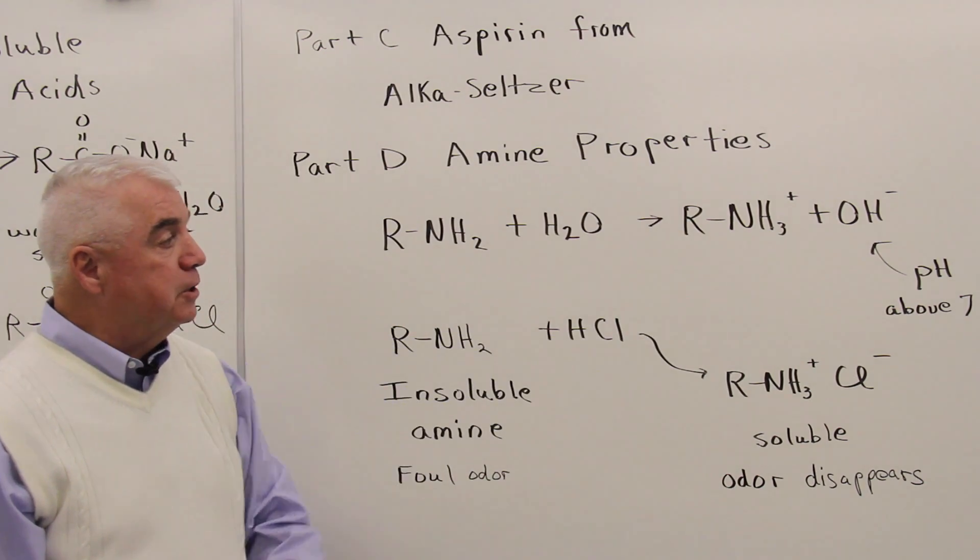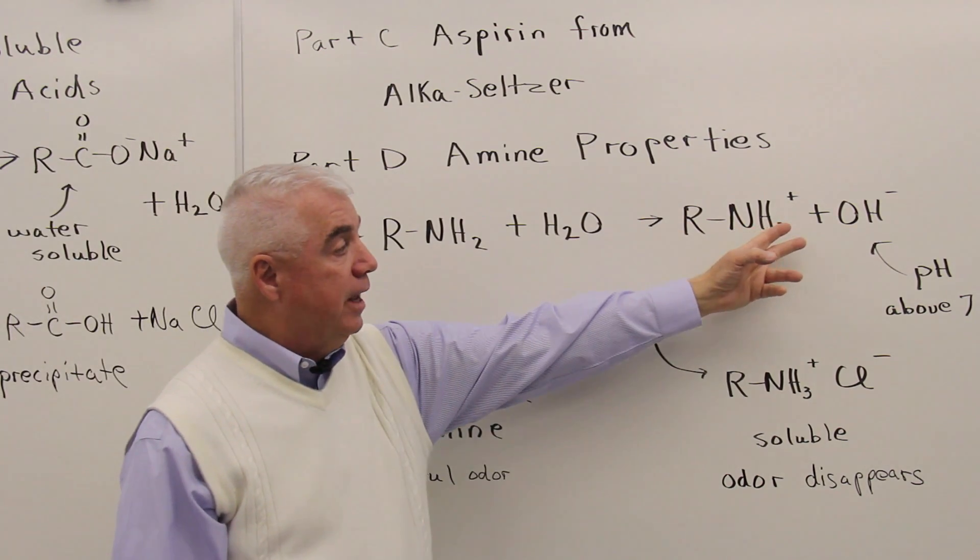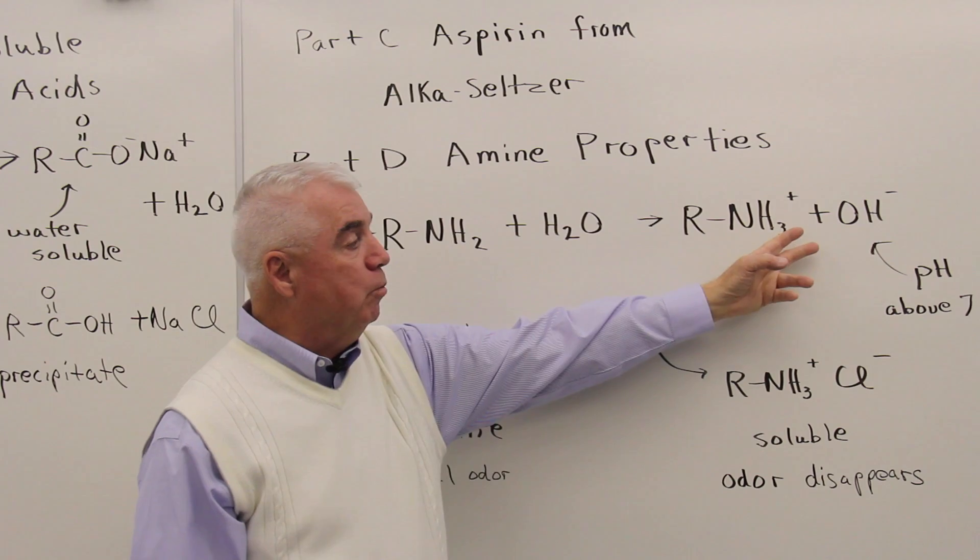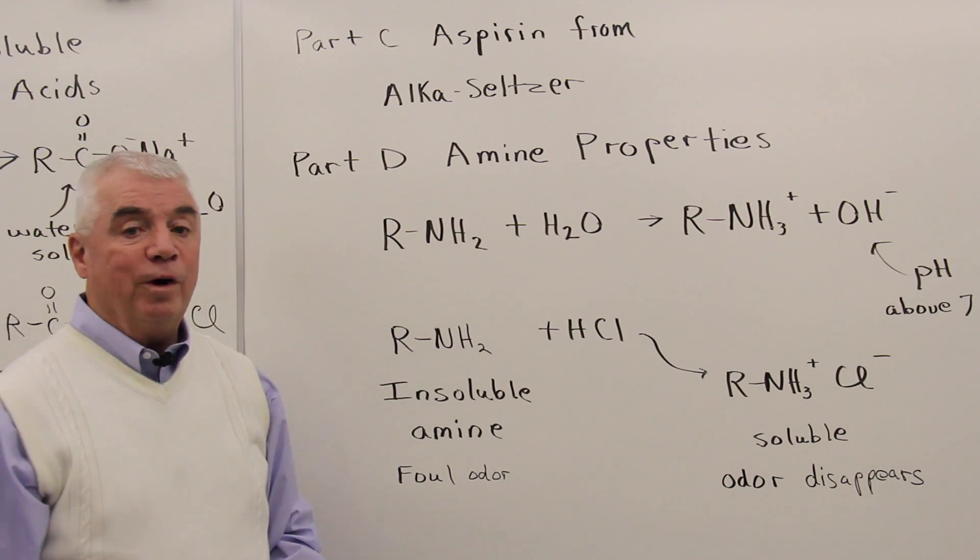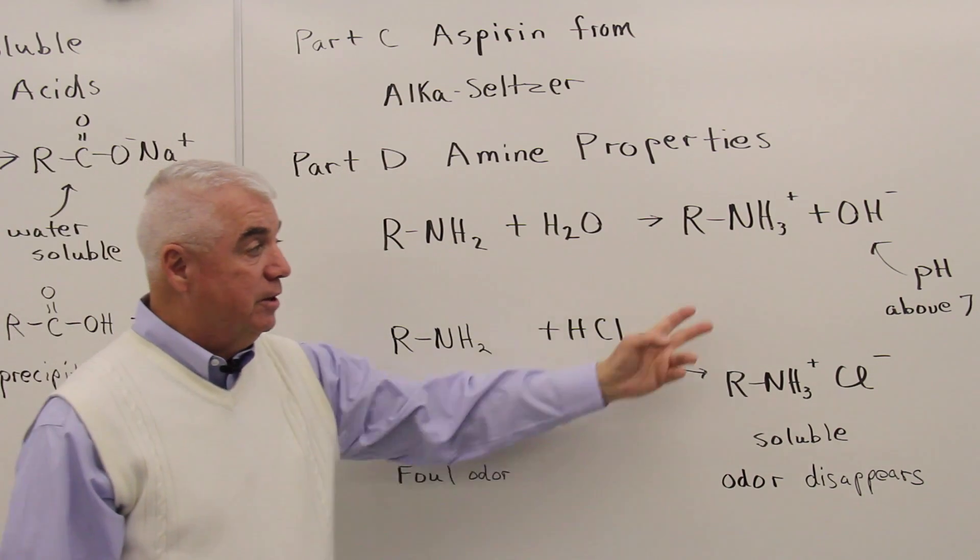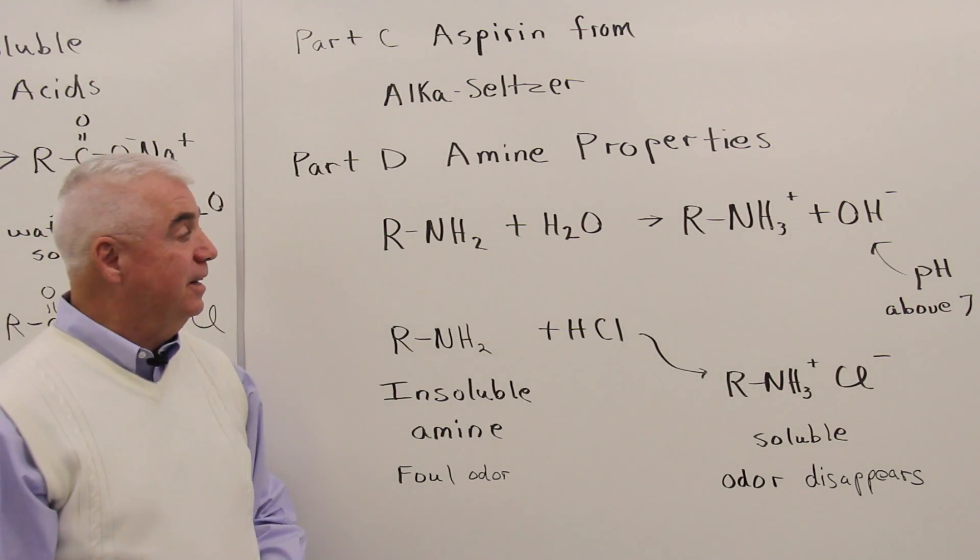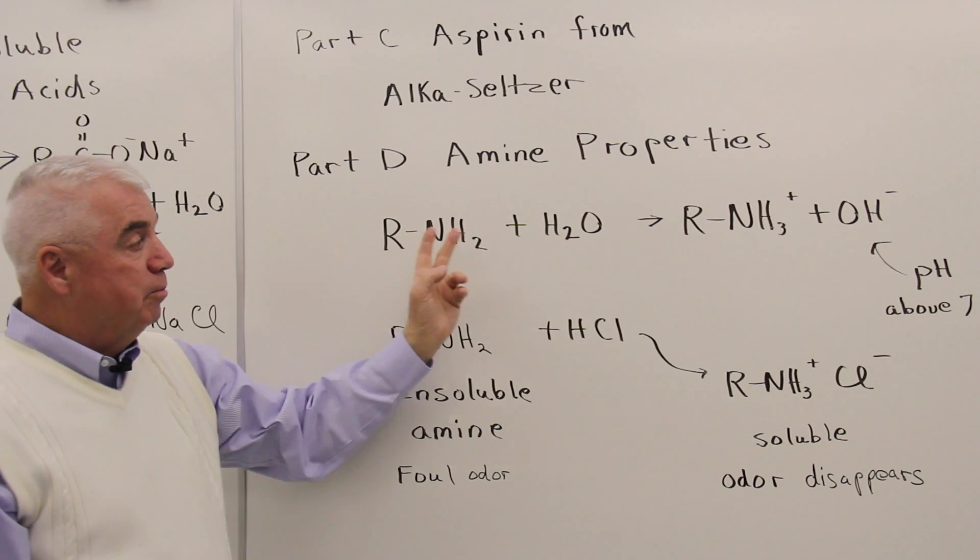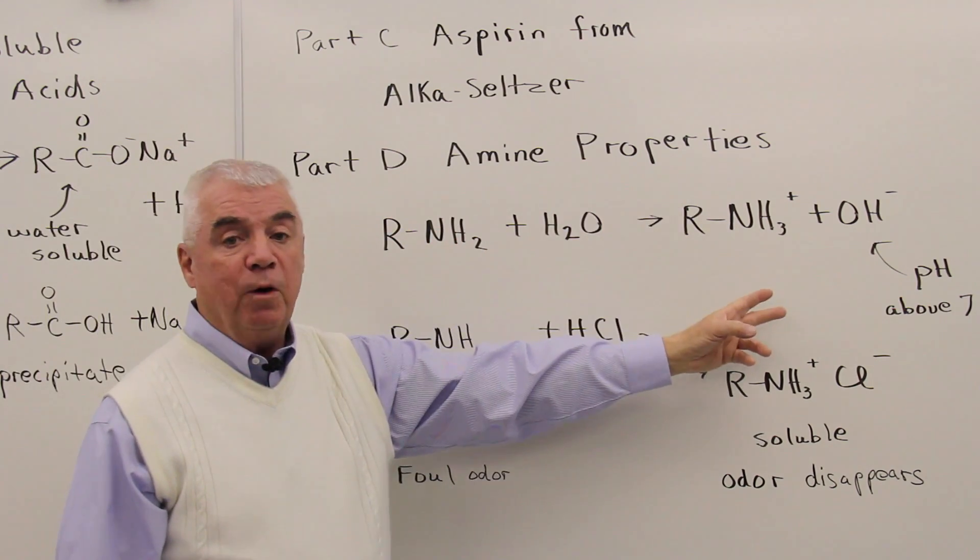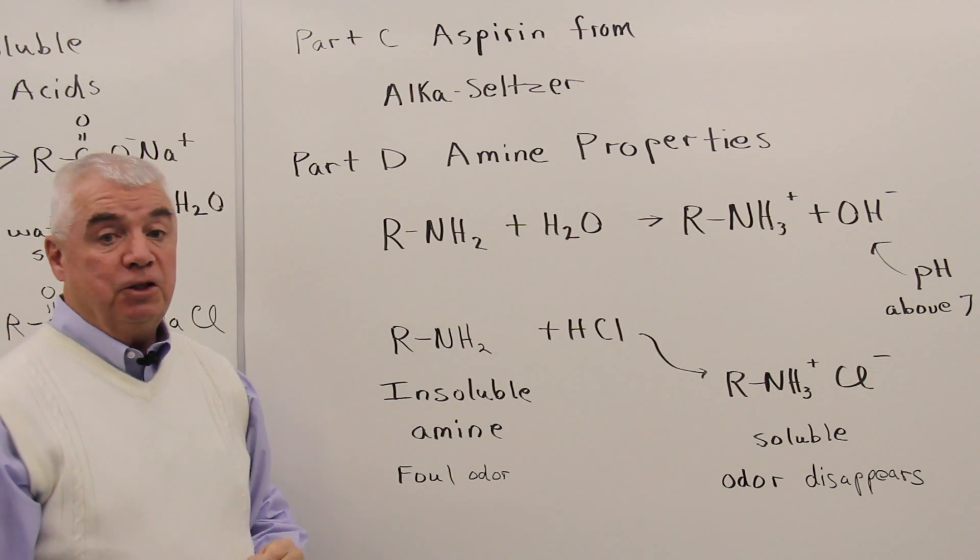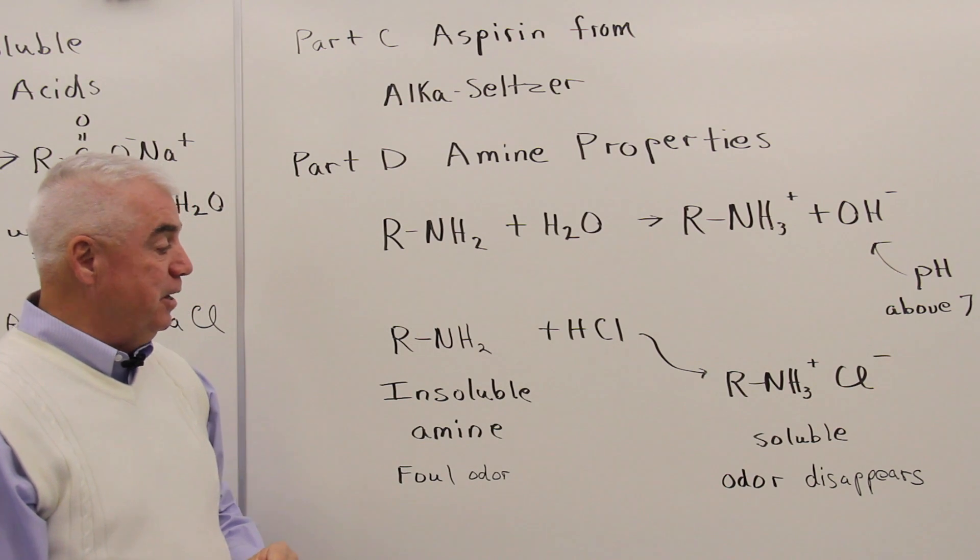And as H plus is taken away from water it leaves behind OH minus, which is basic, that's going to give you a pH above 7. So if you test a compound with pH paper and it gives you a pH greater than 7, chances are you've got an amine.